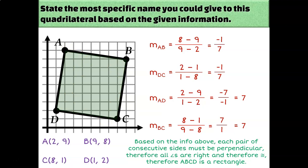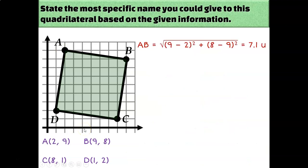But is it a square? It could be something more specific than a rectangle, and we have to show whether it is or isn't. If it is a square, then all four sides have to be the same length. If it's just a rectangle, then opposite sides will have equal lengths but not all four sides will be equal. So the next step is to use the distance formula to calculate each of these measurements.